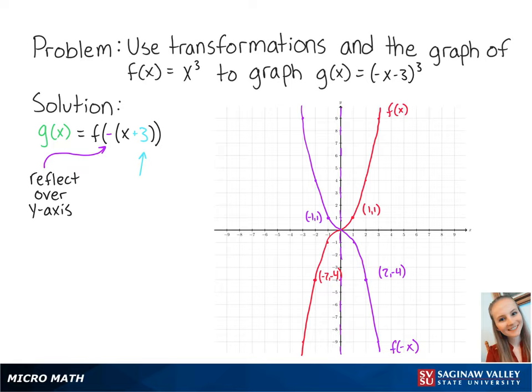Adding 3 to x means that we will shift the new graph to the left by 3 units. So our new points are at (-1, -4) and (-4, 1).